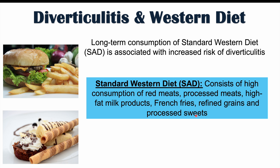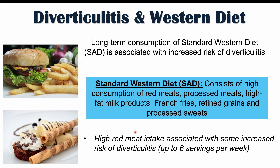In the standard Western diet, we have refined, low-fiber grains, and many of these foods are also low in fiber. High red meat consumption also increases risk. Together, low fiber and high red meat intake increase the risk for diverticulitis. The risk from red meat plateaus at about six servings per week, after which there's no further increase. Low dietary fiber is the larger contributor to risk, with high red meat intake a lesser factor.